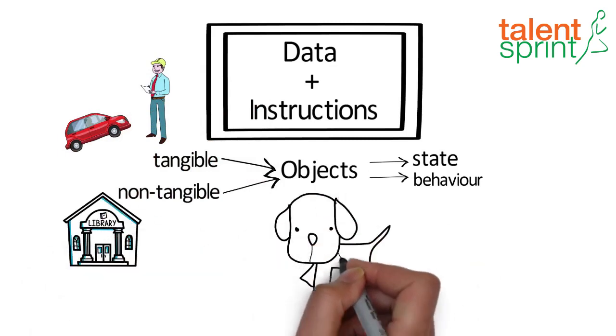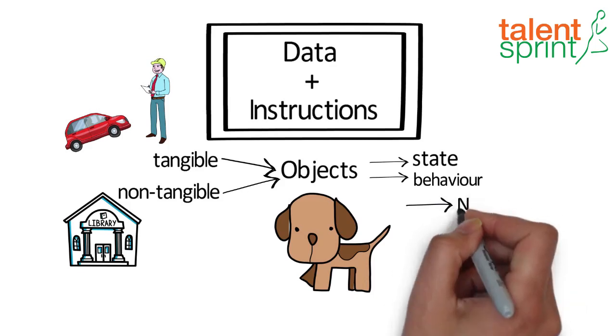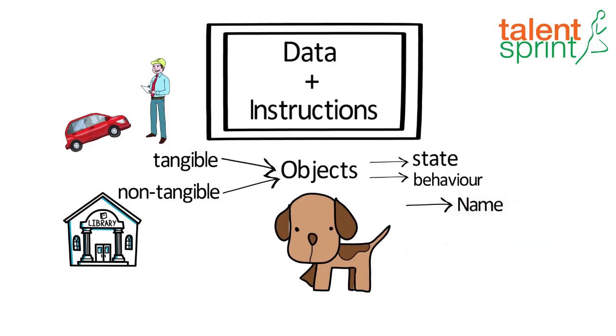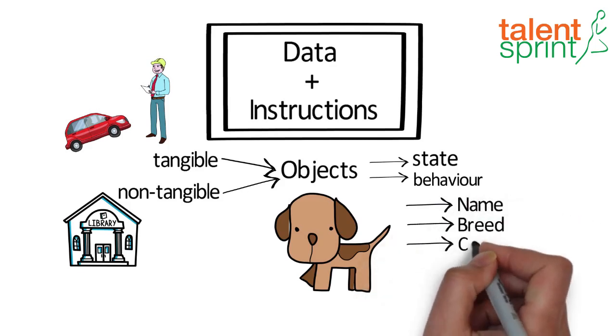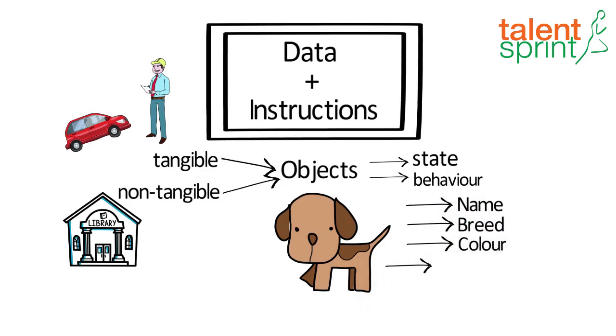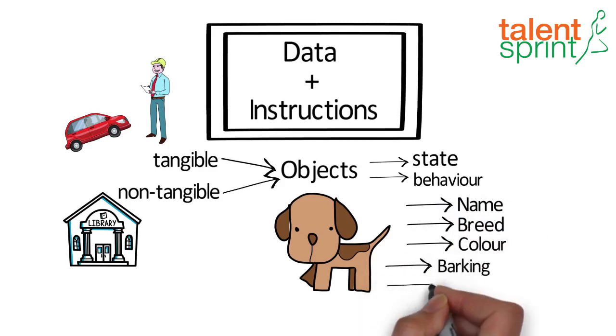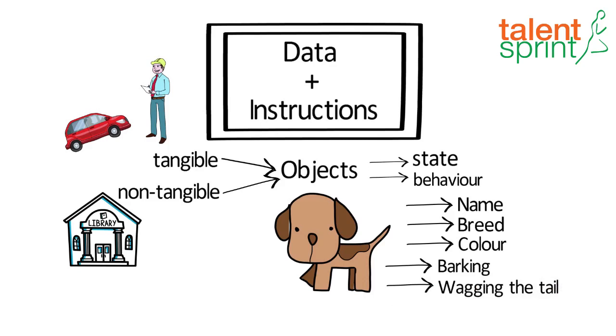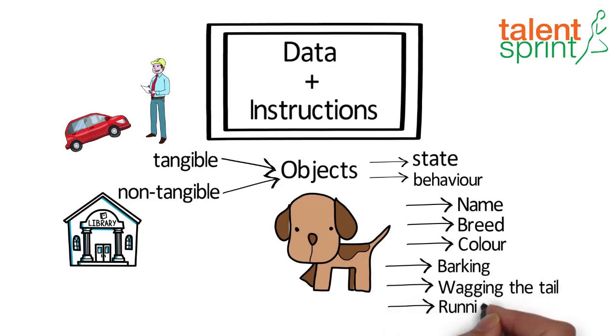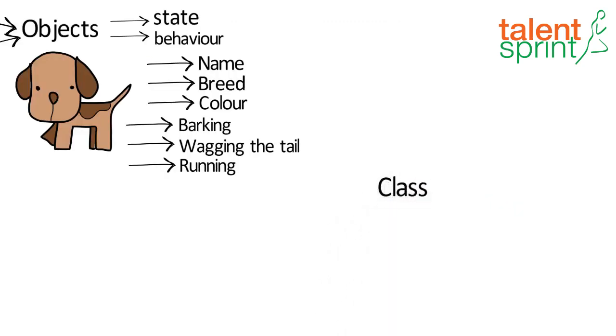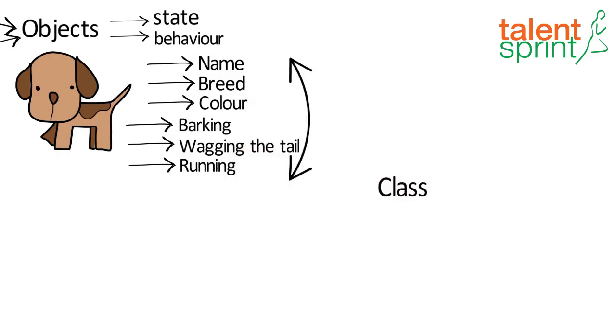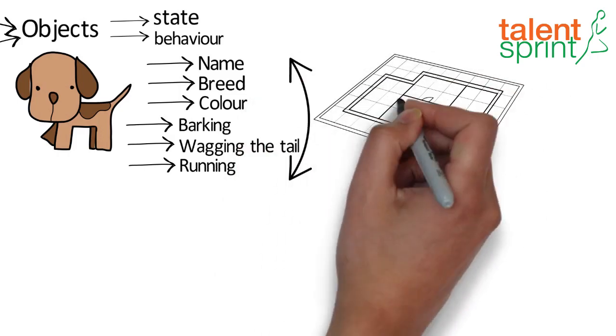If we consider a dog, let's say, then all its physical properties define the state of the object like name, breed, color, and the things that it can do become the behavior of the object like barking, wagging the tail, running. And a class is simply put the blueprint that defines all these states and properties the object can have.